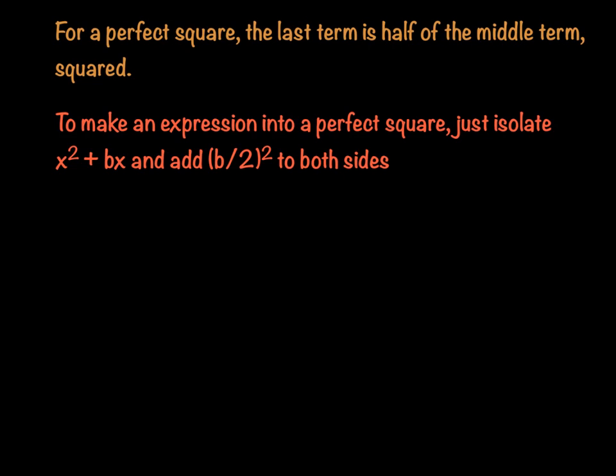In order to make an expression into a perfect square, isolate the x squared plus bx part — move anything else to the other side of the equation — and then add half of b squared to both sides. You'll have a perfect square on one side, and that makes it something you can solve by hand.